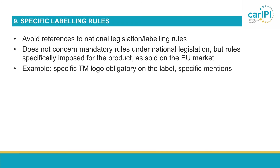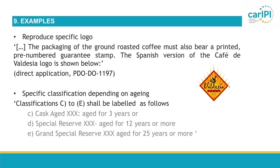Under the last heading of the summary specification, specific labeling rules should be indicated. To be clear, this does not concern mandatory rules under national legislation, but specific rules imposed specifically on this product as it will be sold on the EU market. Typical examples would be the use of a specific logo or trademark logo which is compulsory on the label, or specific mentions. It is important to avoid including references to national legislation or labeling rules under this heading. If you consider that such national rules are relevant for labeling in the EU, you could explain their contents in the application, but do not refer to those laws or rules directly.